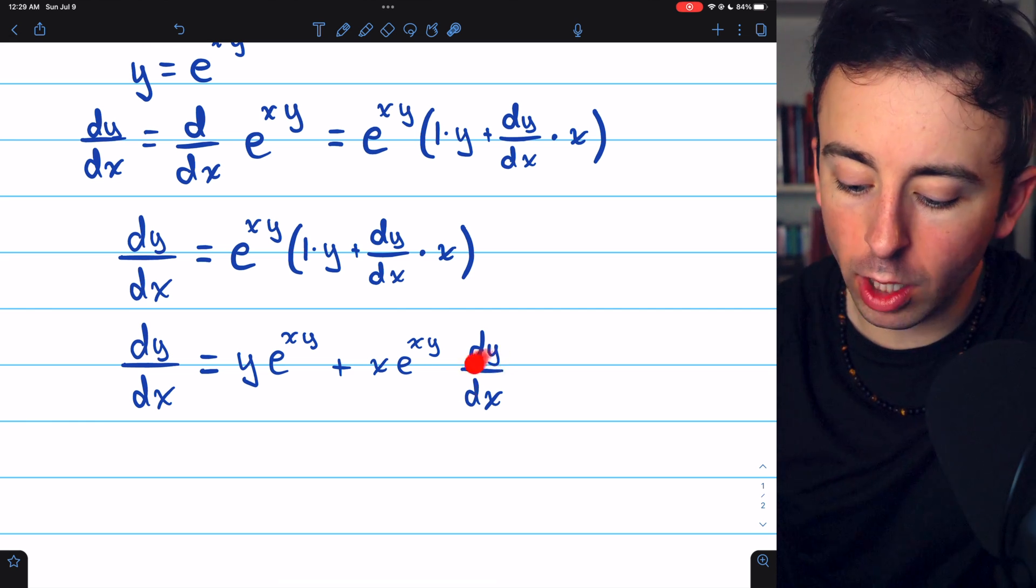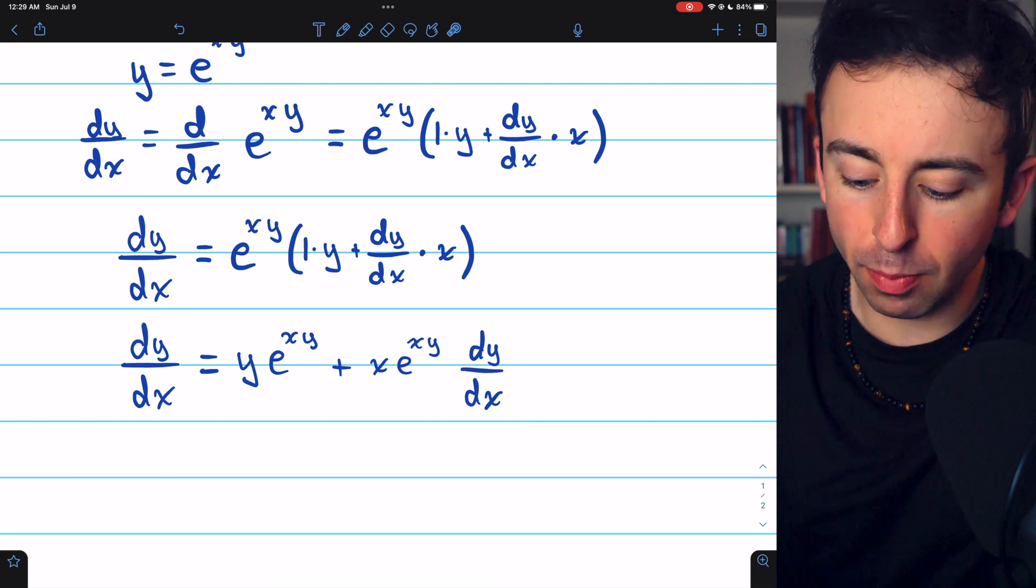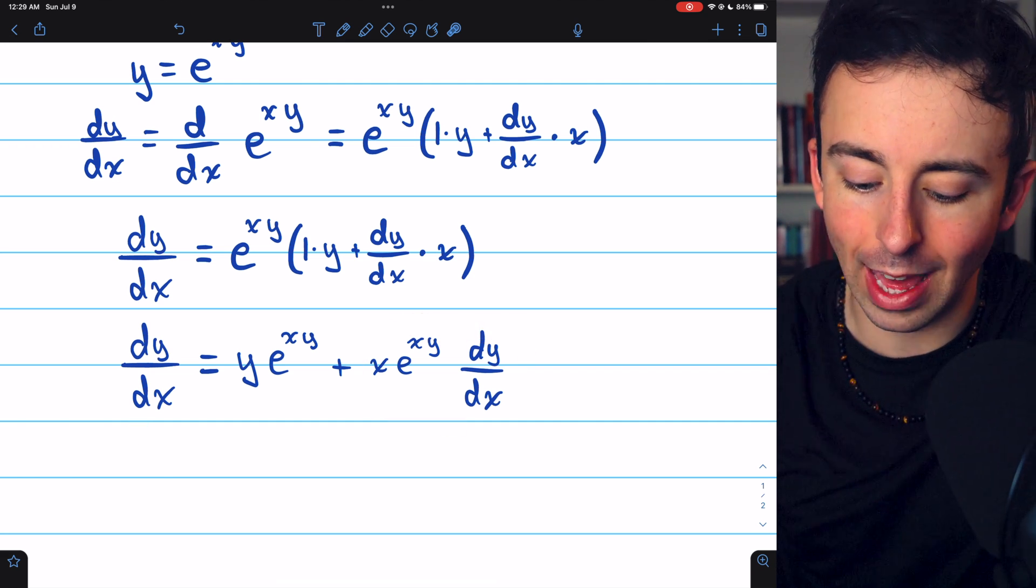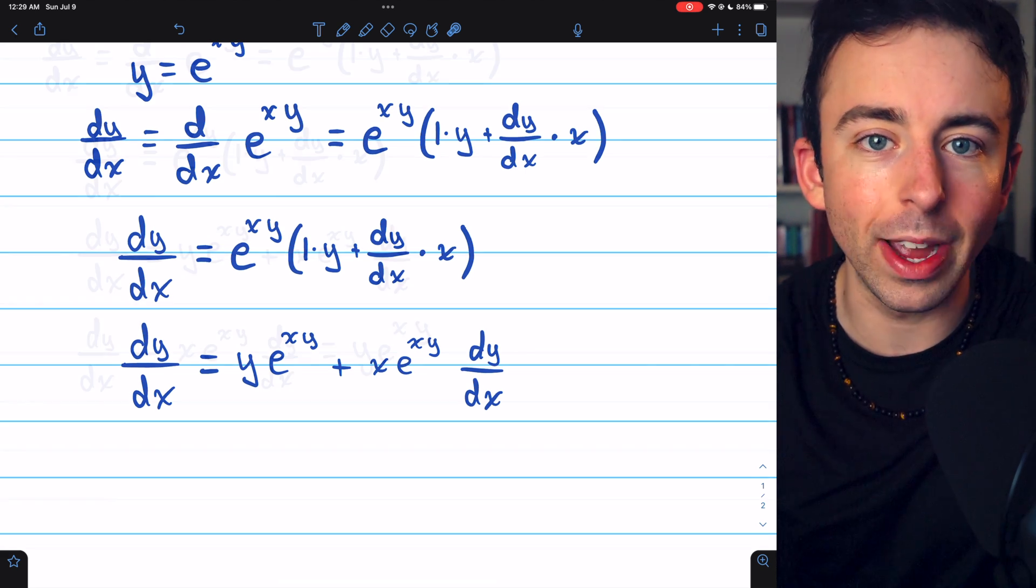Now, we want to collect all of our dy dx's on one side of the equation so that we can factor. Let's move this term over to the left. So we'll subtract x e to the xy dy dx from both sides of the equation.